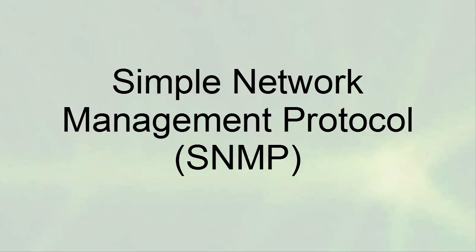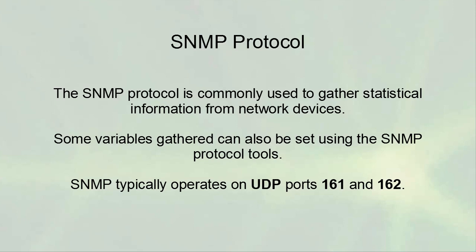Simple Network Management Protocol, or SNMP, is commonly used to gather statistical information from networking devices. It can grab information such as bandwidth consumption, port status, and machine names. This information is used to manage an entire network. Some variables can also be set using SNMP. It typically operates on UDP ports 161 and 162 — 161 for normal communication and 162 for traps when there is a problem.